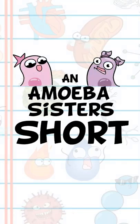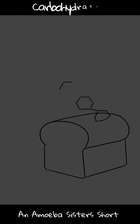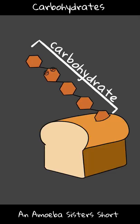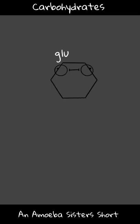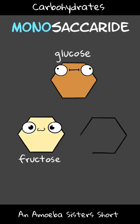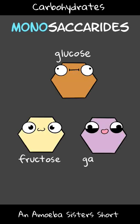Welcome to Amoeba Sisters Short, focused on a biomolecule: the carbohydrate. As we've mentioned, you find them in many foods. The monomer or building block of a carbohydrate is the monosaccharide. The sugar glucose is a monosaccharide, and so is fructose or galactose.